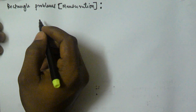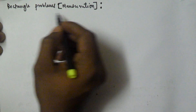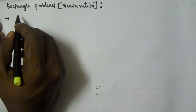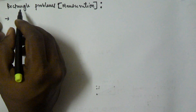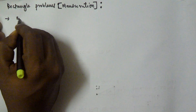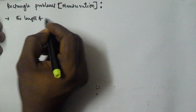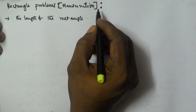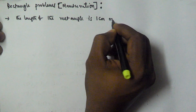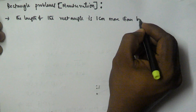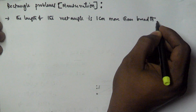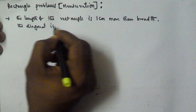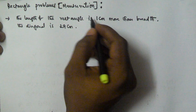Hello friends, in this video we will see a problem related to the rectangle, as a part of mensuration. The given problem is: the length of the rectangle is one centimeter more than its breadth, and the diagonal is 29 centimeters.